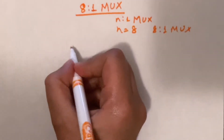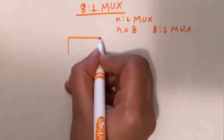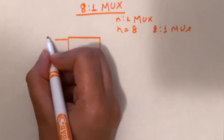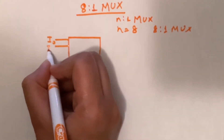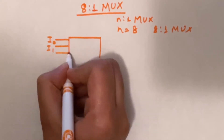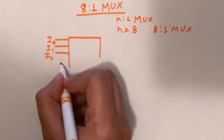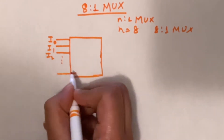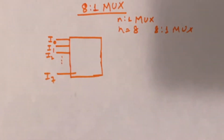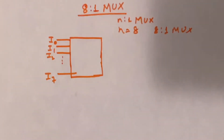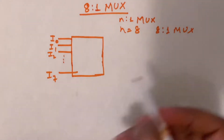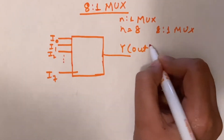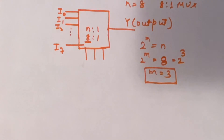Let's check out the block diagram. With n equal to 8, we have n inputs: i0, i1, i2 through i7. So i0 to i7 will be 8 number of inputs, and we have one output that is Y.